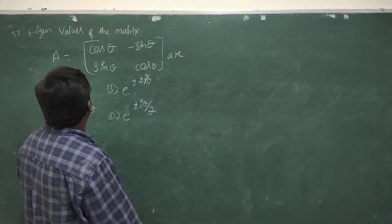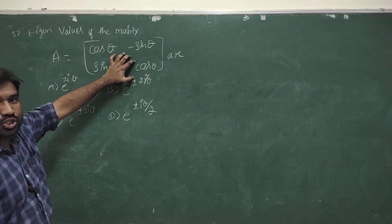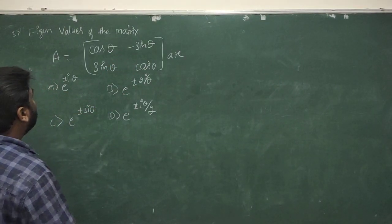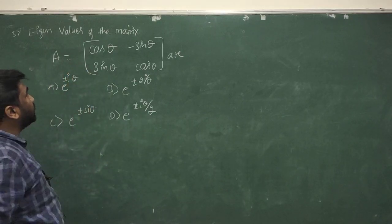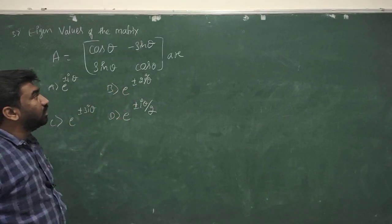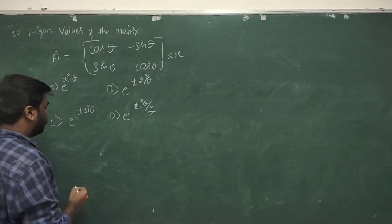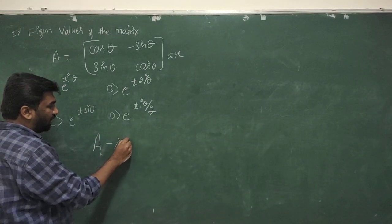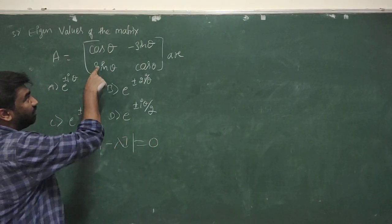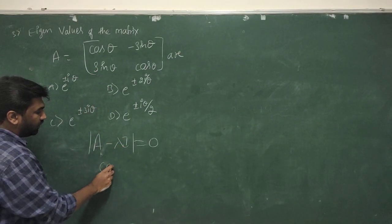This is question number 3, based on eigenvalues — also a repeated question. The given matrix A equals [cos θ, -sin θ; sin θ, cos θ]. We need to calculate the eigenvalues. The characteristic equation is det(A minus λI) equals 0.